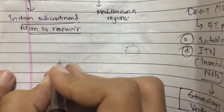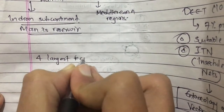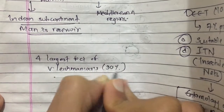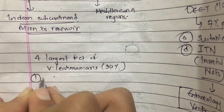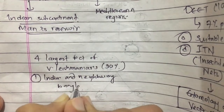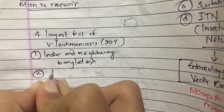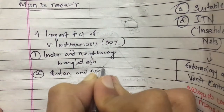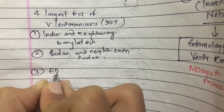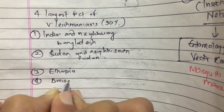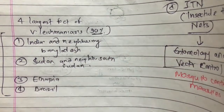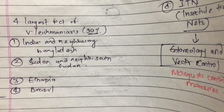The four largest foci of visceral leishmaniasis in the world, which together cover about 90 percent of all visceral leishmaniasis cases, are: first, India and neighboring Bangladesh; second, Sudan and neighboring South Sudan; third, Ethiopia; and fourth, Brazil.